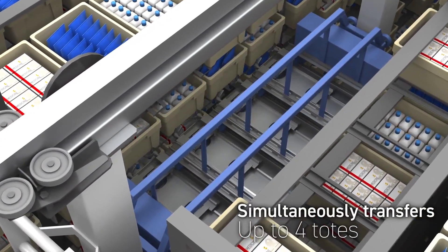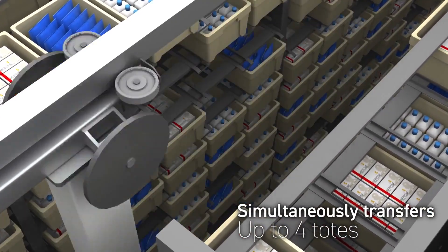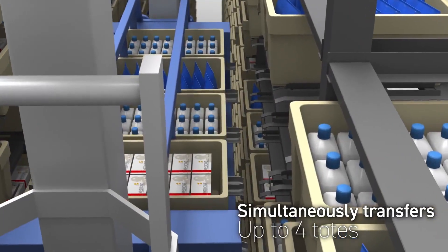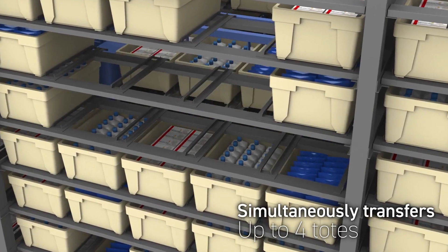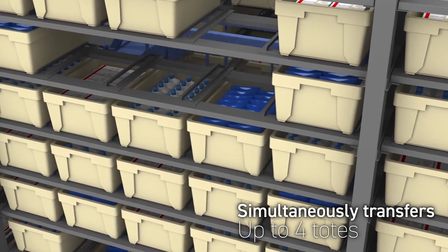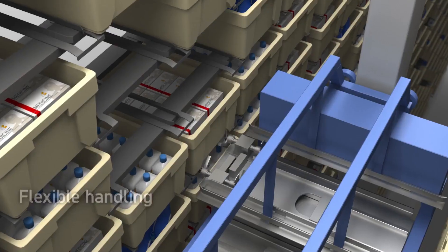MiniLoad is the industry's first high-density ASRS to store and transport four totes simultaneously. By drastically reducing loading and transfer time, it achieves unprecedented high throughput.